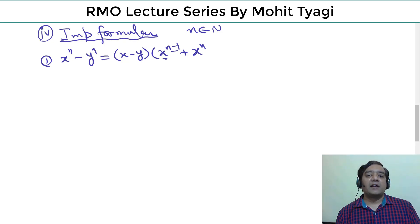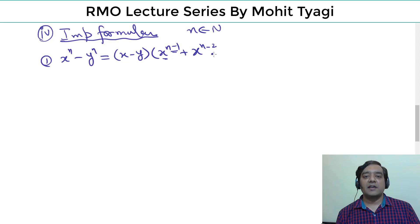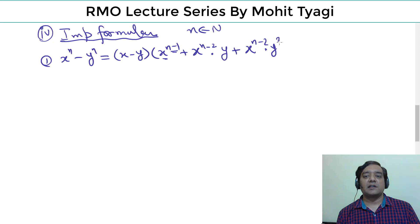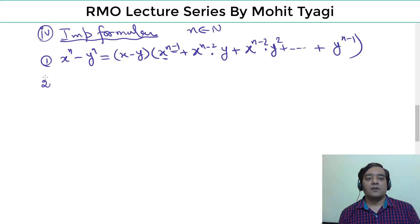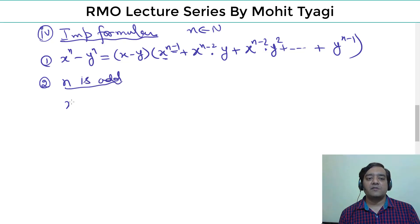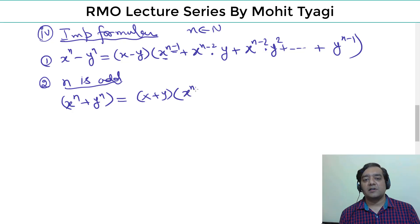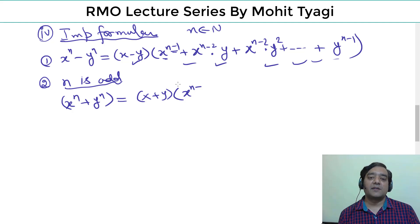In the second factor, we start with x raised to (n−1), then decrease x's power by 1 each time while increasing y's power, continuing until the last term. This factorization is valid whether n is even or odd. Additionally, if n is odd, then xⁿ + yⁿ = (x + y) times a similar bracket, where terms have alternating plus/minus signs.